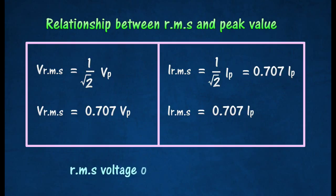The root mean square values of voltage and current represent the effective value of the voltage and current in an AC circuit.